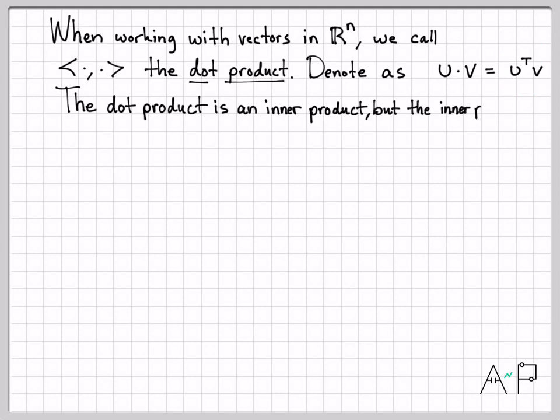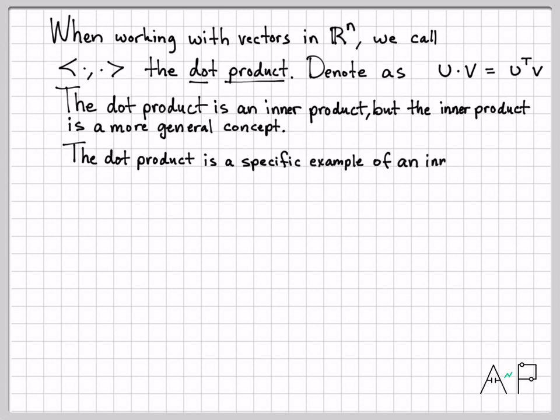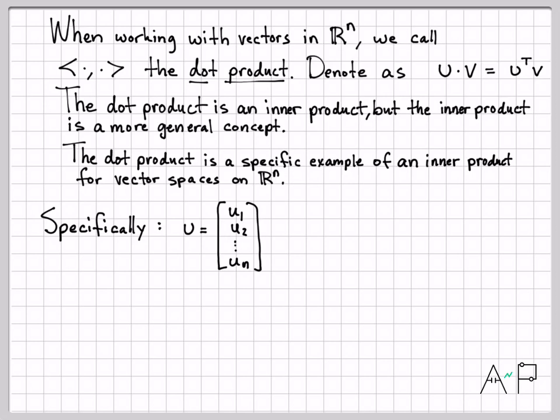So the dot product is an inner product, okay? But in general, the inner product is a much more general concept. The dot product, we say, is a specific example or the specific instance of an inner product for the special case when I'm working with vector spaces on Rn. So for the special case when I'm working with a vector space in Rn, let's write out very clearly what we mean by the dot product.